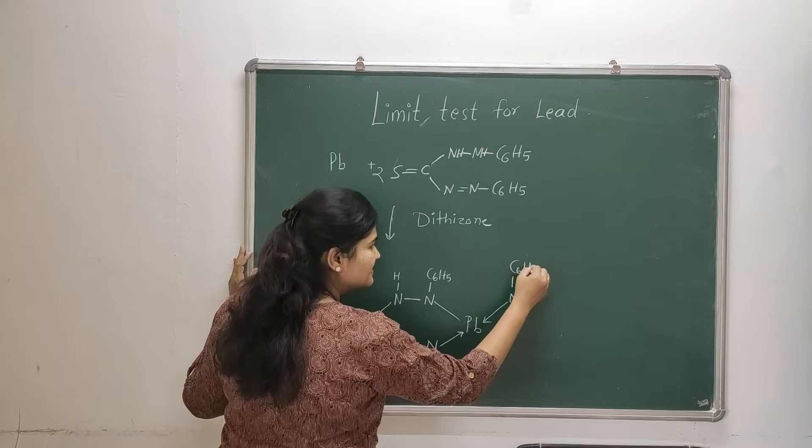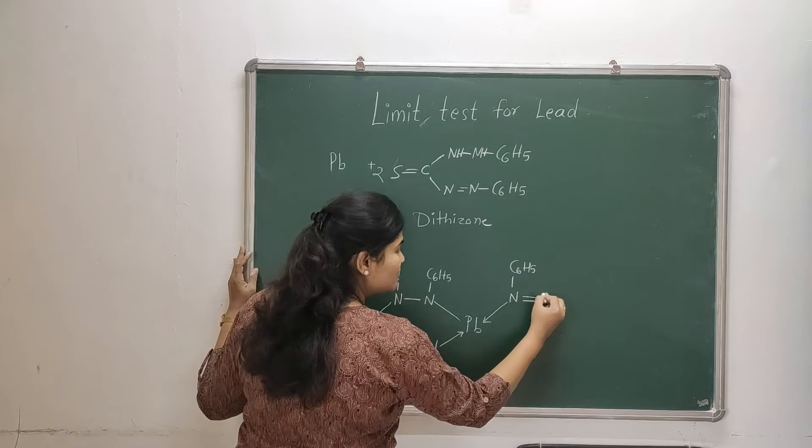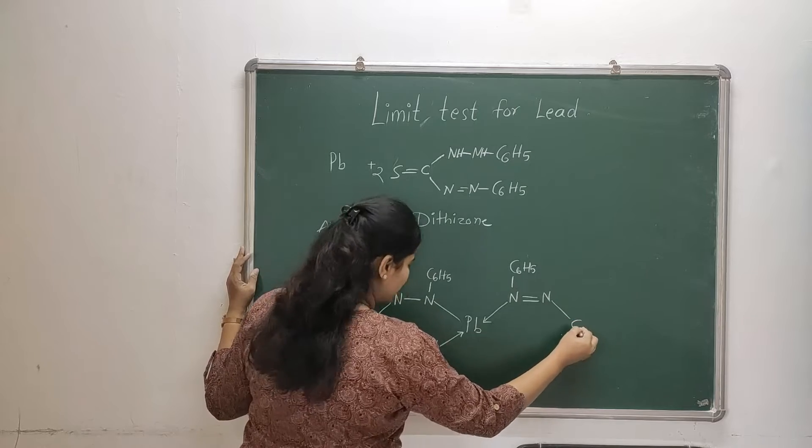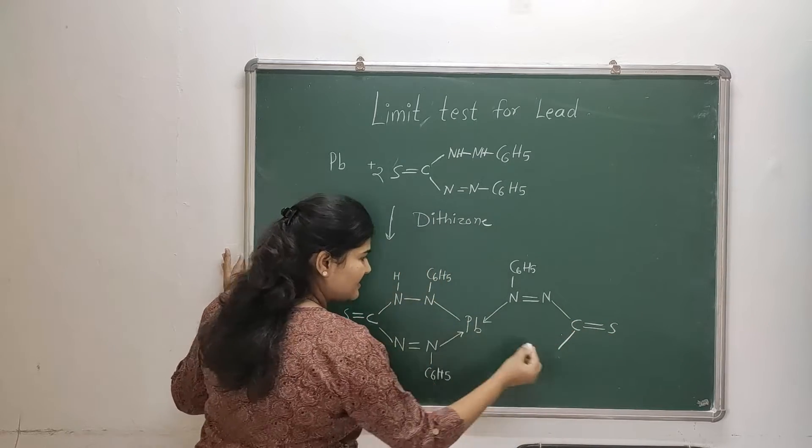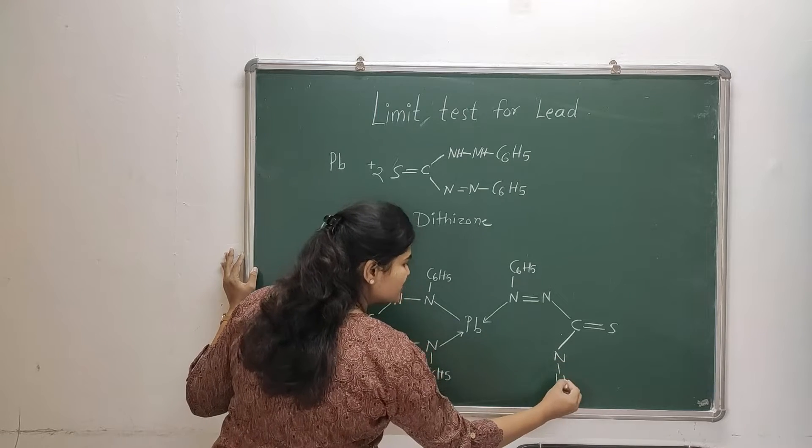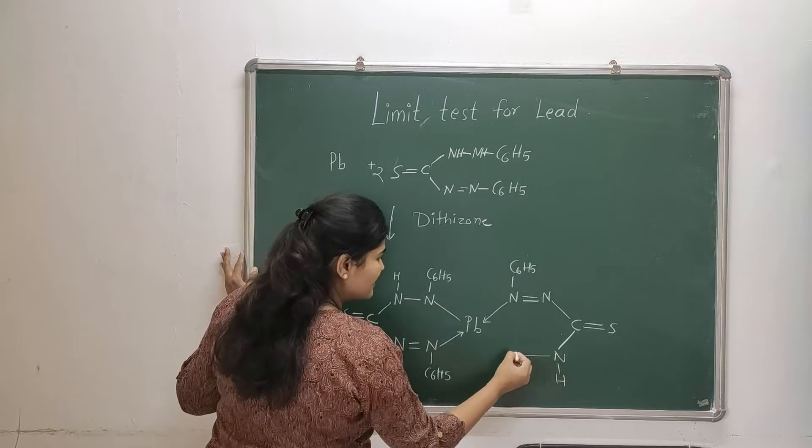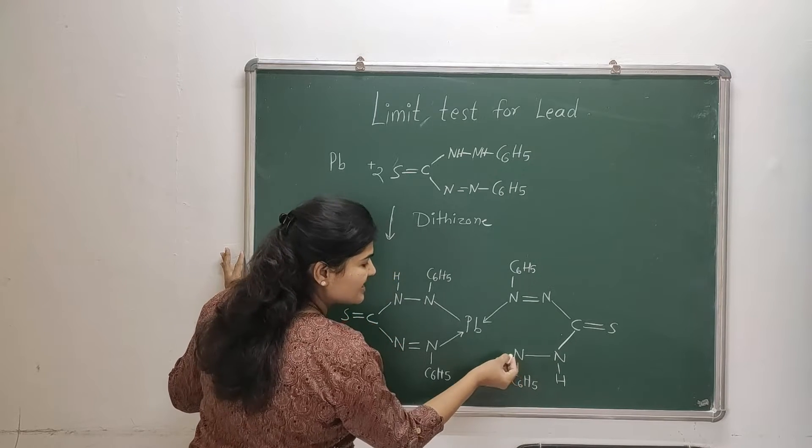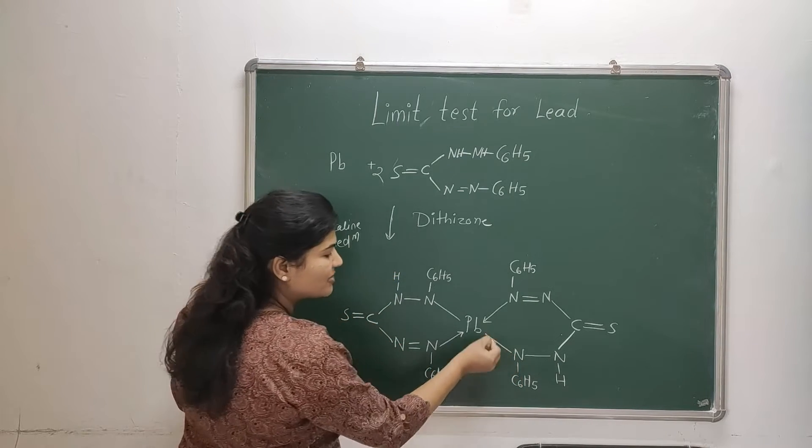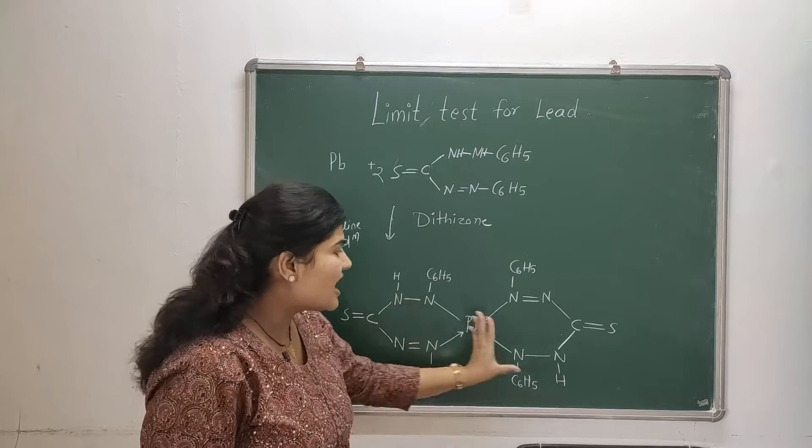Then in the later part, the same molecule will be attached like this: this nitrogen, phenyl, then double bond nitrogen, then it is attached to carbon - carbon is attached to sulfur. Then this carbon is again attached to nitrogen which is attached to hydrogen and then nitrogen which is attached to phenyl group.